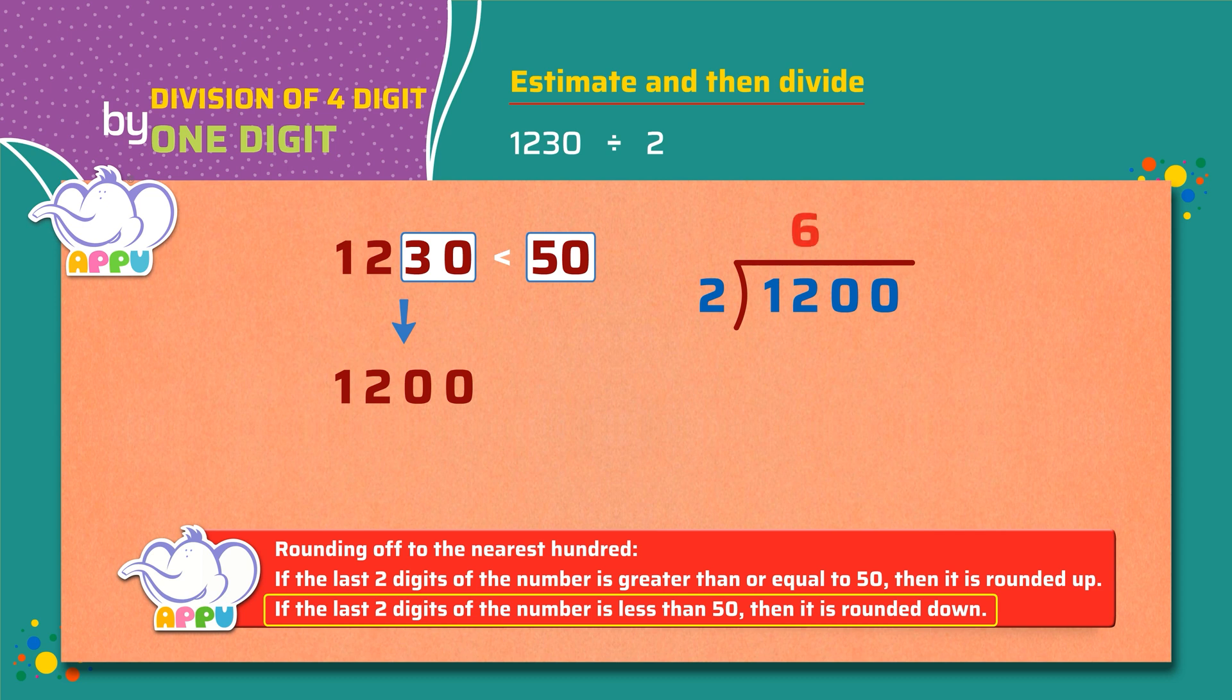Step 2. We multiply 2 and 6. We get 12. Step 3. We subtract 12 from 12. We get 0.